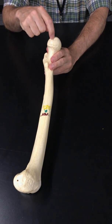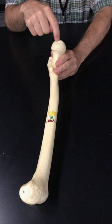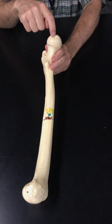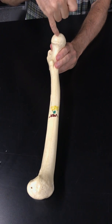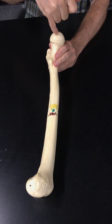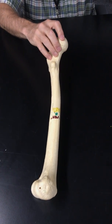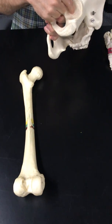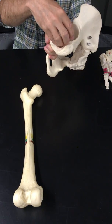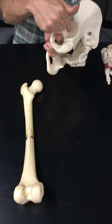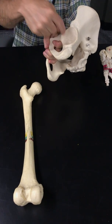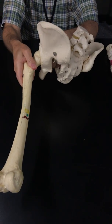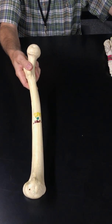There's a little depression here, the fovea capitis. A ligament attaches from here to here. A ligament within, an intracapsular ligament within the joint that attaches this to this. Locks them together. Fovea capitis.